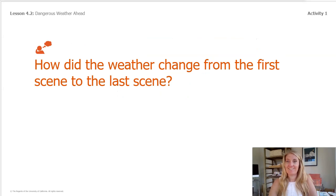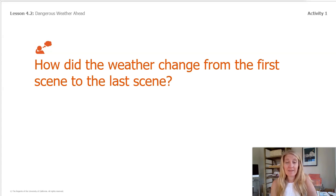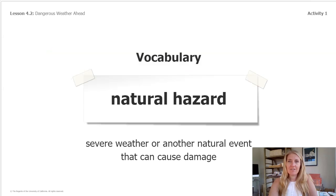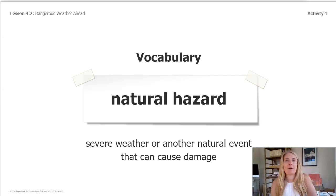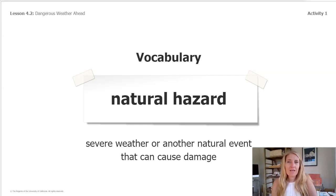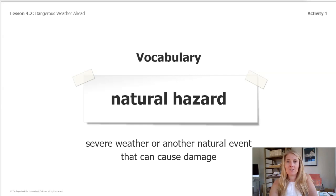Those are your three scenes. How did the weather change from the first scene to the last one? I bet you noticed in the third scene more water, stronger winds, and damage to a building. That means the weather was more severe. Here is a really important vocabulary word — you might want to write it down. You can pause the video and even make a drawing so that you know what this means. A natural hazard is severe weather or another natural event that can cause damage. In the example we just imagined, the wind and rain caused the trees to fall and the streets to flood.